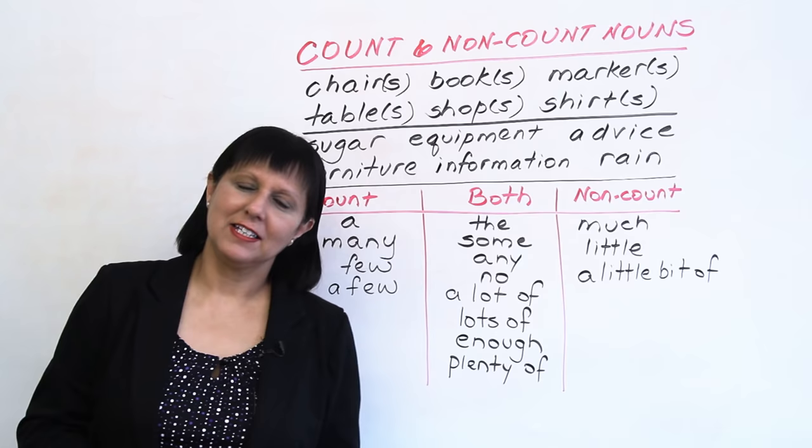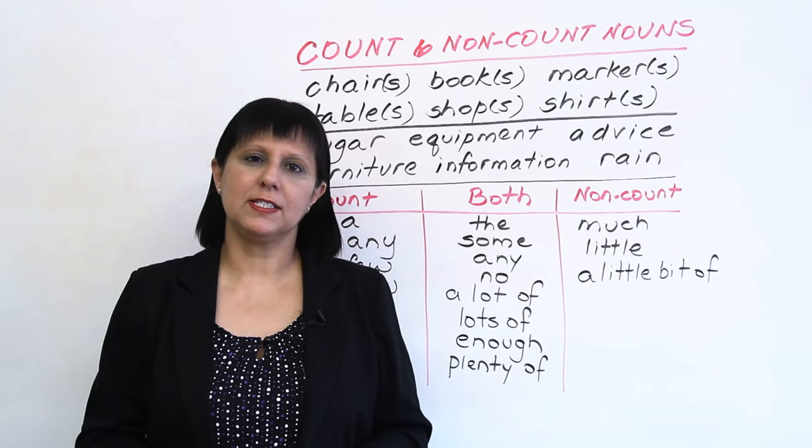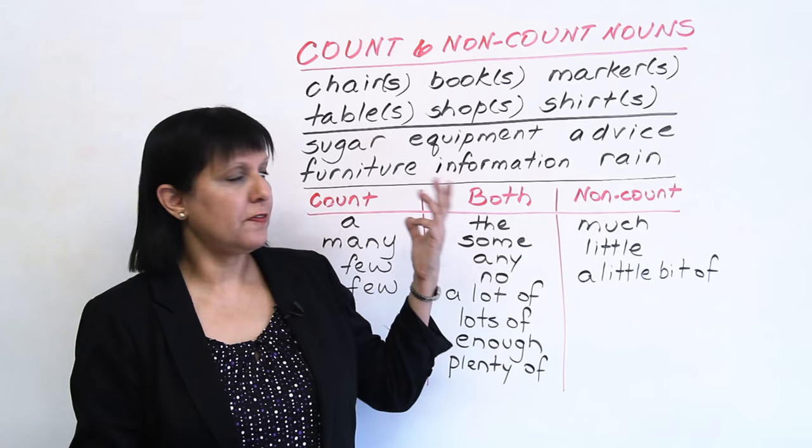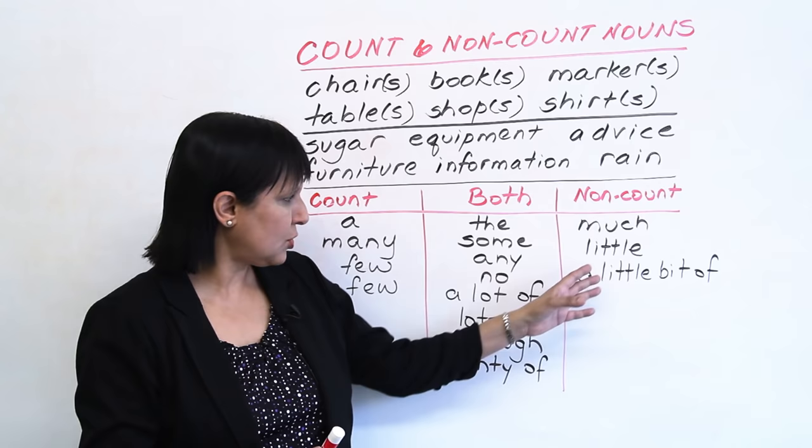So if you want to practice this, there are two things you can do. First, you can go to our website at www.engvid.com and do a quiz on this particular topic. You can also go to the resources section of the same website, where you'll find a list of the countable and non-countable nouns and some of these terms — everything listed for you, which you can download for your reference. Good luck with your English, and thanks very much for watching. Bye for now.